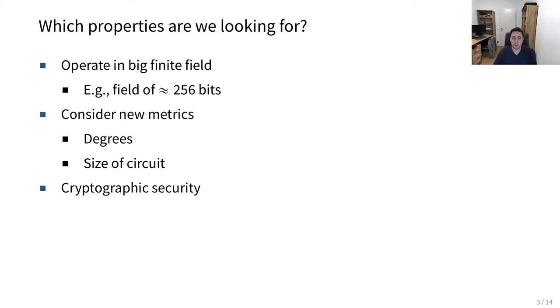To recap, which properties are we actually looking for? We want to operate in a big finite field. This can be a binary field, a prime field, but we are focusing on a prime field here. Big means a field of a size of around 256 bits. We also consider new metrics, for example the degrees or the size of the circuit. And finally, of course, we also focus on the cryptographic security of the resulting construction.